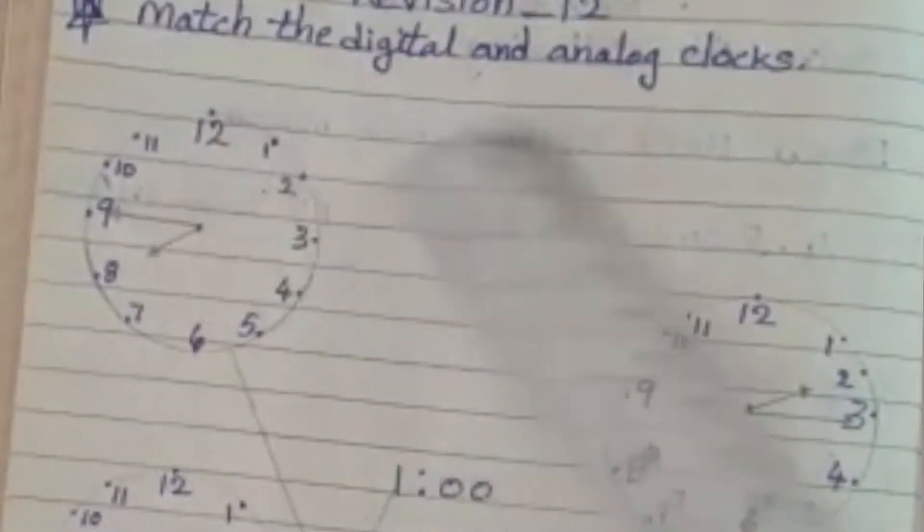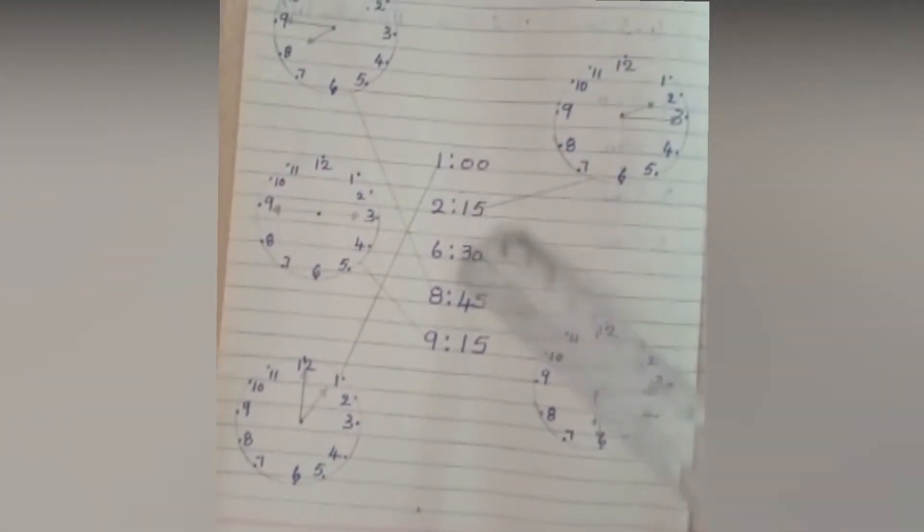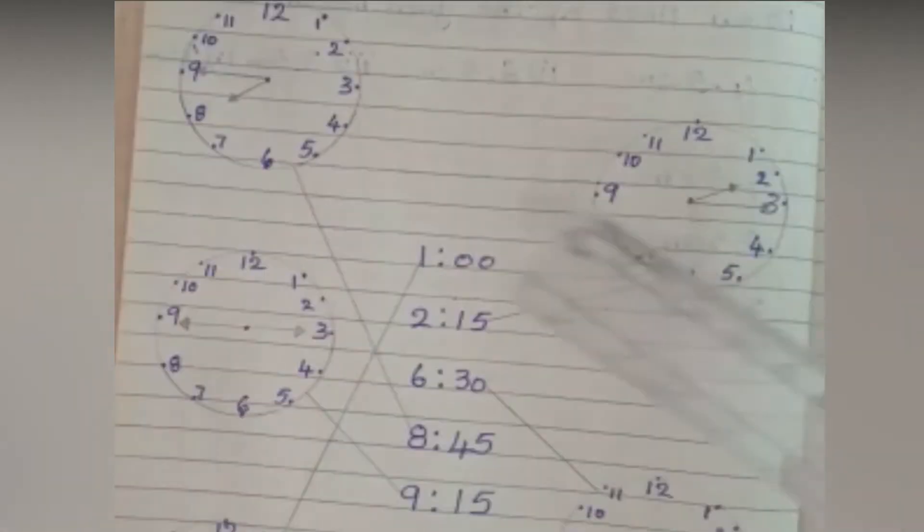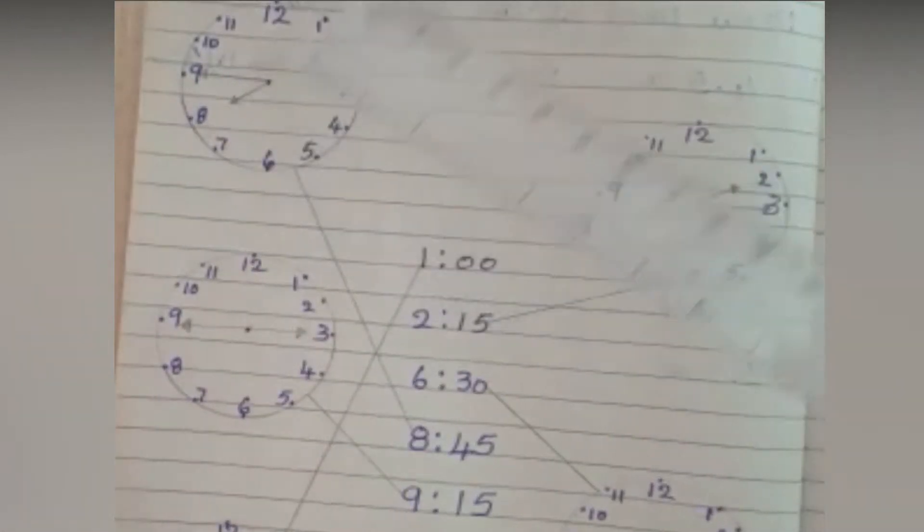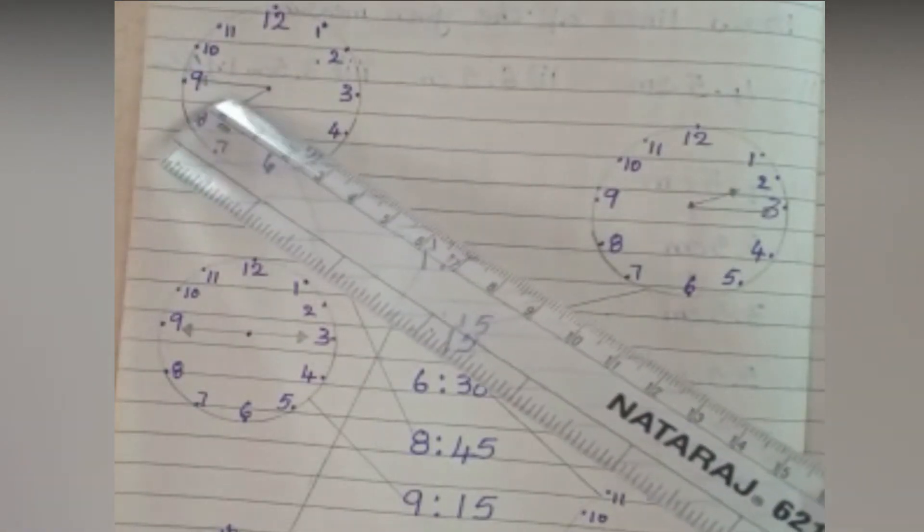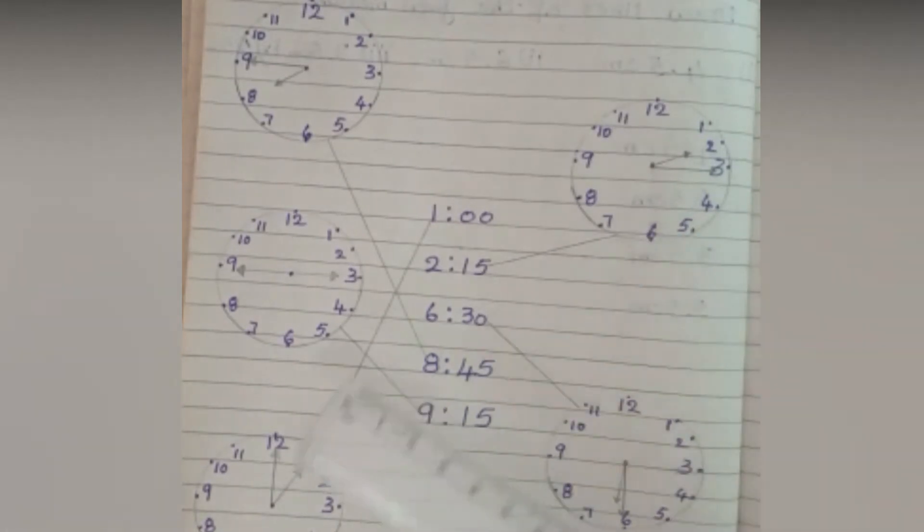Match the digital and analog clocks. Now here, in analog clocks, the short hand indicates hours and long hand indicates minutes. We have to do the matching for the same time shown in the clocks. For example...